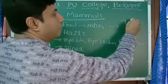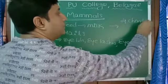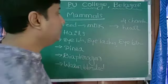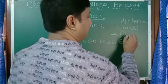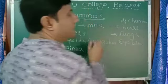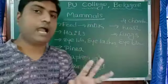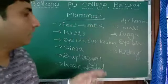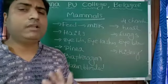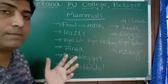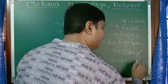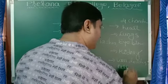The heart is four-chambered. Lungs are the respiratory organ — we have a pair of lungs. Kidneys are our excretory organ. We are considered the most intelligent group in the animal kingdom, with a very well-developed nervous system and a very well-developed brain.